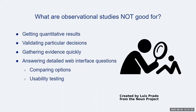Like other qualitative methods, observational studies are not good at getting quantitative results. They're not good at gathering evidence to validate particular decisions, and they're not good at gathering evidence for anything quickly. Observational methods can be very time intensive and even a bit boring at times. These studies are also not good at answering specific interface questions. If you want to test an interface, it's likely better to conduct a usability study or an A-B test.